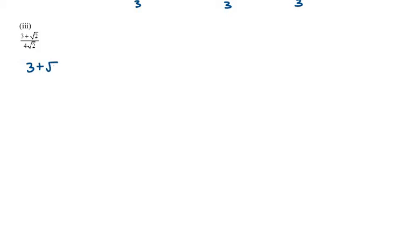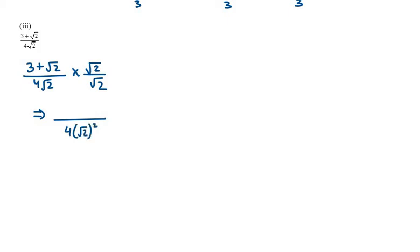Let's move on to the third part. Third part is 3 plus under root 2 over 4 under root 2. Now let's look at the denominator — we have under root 2. So you multiply by under root 2 and divide by under root 2. We multiply 4 under root 2 by under root 2. Under root 2 by under root 2 will be 2 only.